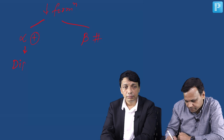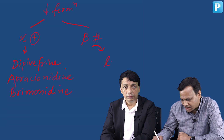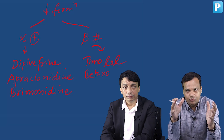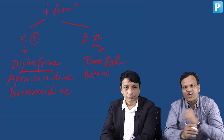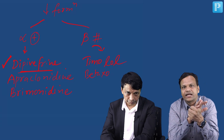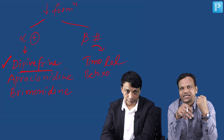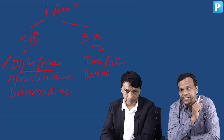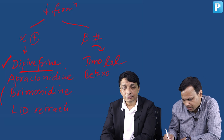Alpha agonist drugs include dipivefrin, apraclonidine, and brimonidine. For MCQs, the most important topic is adverse effects. Dipivefrin is a prodrug of epinephrine or adrenaline. The most important adverse effect of epinephrine is black pigmentation of the conjunctiva — when adrenaline is added to the eye, it gets oxidized by air and forms a compound called adrenochrome, which is a black-colored pigment. This is pigmentation of the conjunctiva, not the iris. The main side effect of apraclonidine is lid retraction.